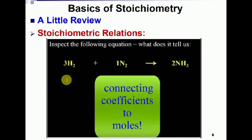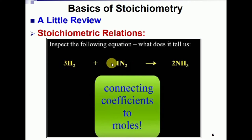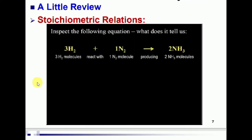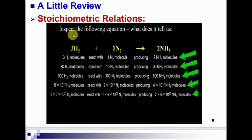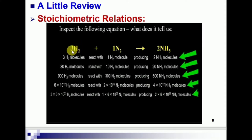The basics of stoichiometry: hydrogen reacts with nitrogen to form ammonia. The stoichiometric coefficients are connected with the number of moles — 3 moles of hydrogen react with 1 mole of nitrogen to change into 2 moles of ammonia. Stoichiometry also tells us that 3 hydrogen molecules react with 1 nitrogen molecule to produce 2 molecules of ammonia. Based on your need you can scale up the molecules, but the stoichiometric ratio is always constant — hydrogen is always thrice the amount of nitrogen.